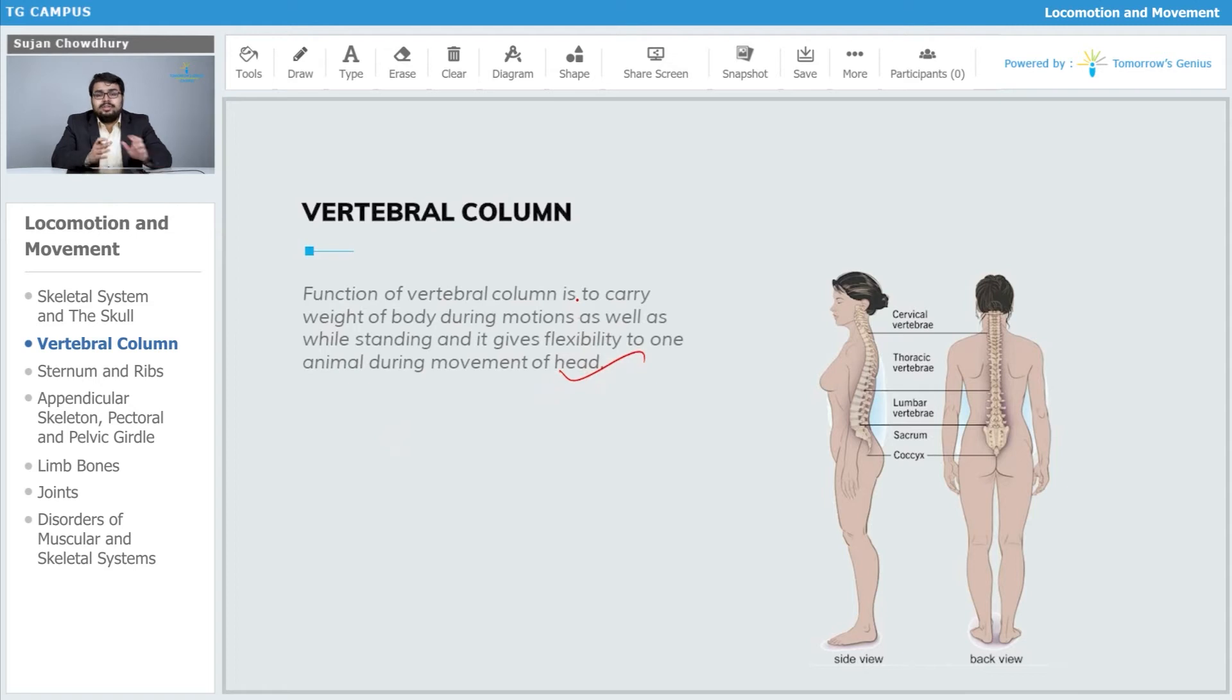The vertebral column is not only important for maintenance of body structure and posture, but it is also helpful to maintain the flexibility of the body during movement of the head or any other body part in order to prevent the rupturing of some important body organs or damage to a particular area.